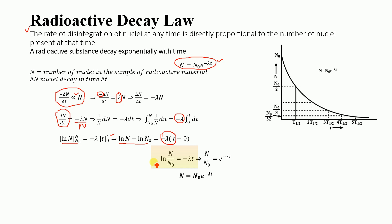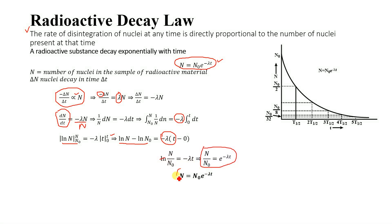Taking the antilog (exponential) on both sides of the equation, the log cancels out and we get an exponential term on the right-hand side: e^(−λt). So N/N₀ = e^(−λt). Multiplying both sides by N₀, we get N = N₀ · e^(−λt), and this is the final form of the radioactive decay law.